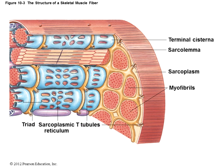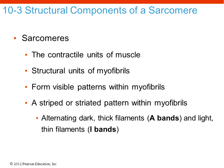Around each myofibril is the sarcoplasmic reticulum, which stores calcium (Ca²⁺). It forms expanded chambers called terminal cisternae that concentrate large amounts of calcium. Deep in the muscle you find the triad: one T-tubule flanked by two terminal cisternae, where calcium is highly concentrated. When an impulse arrives at the triad, calcium is released — and calcium is essentially the on-off switch for muscle contraction.